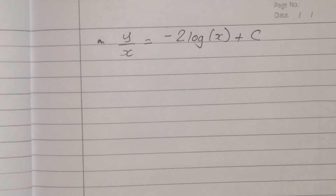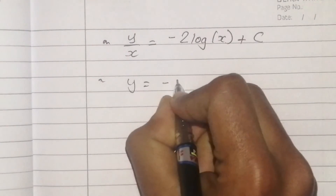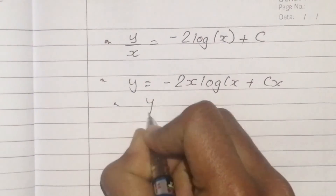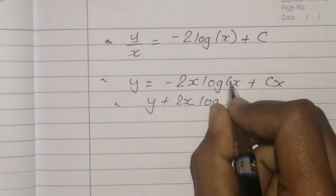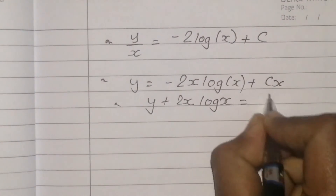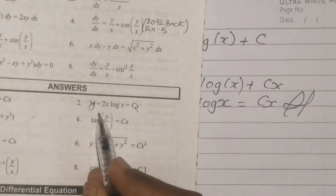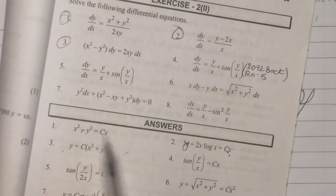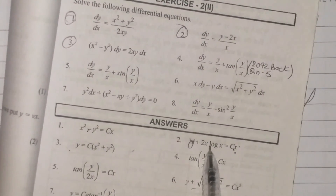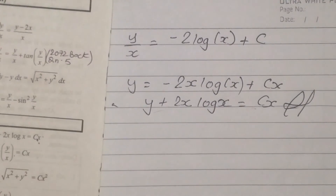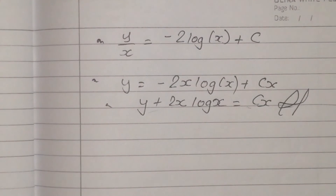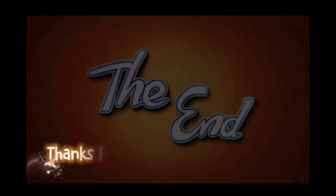Cross-multiplying: y is equal to minus 2x log x plus cx. Rearranging: y plus 2x log x equals cx. Therefore the final solution is y equals cx minus 2x log x, or equivalently y = cx + 2x log x.